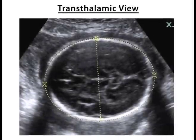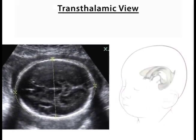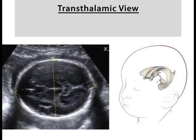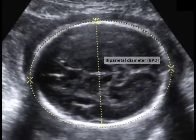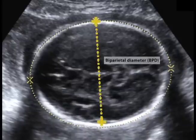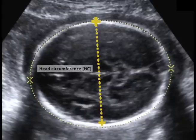Sonographic head measurements are obtained in the transthalamic view. This sonographic view is an axial or transverse image of the fetal head. The thalami and cavum septum pellucidum are important landmarks in this view. The biparietal diameter is measured perpendicular to the sagittal midline, from the outer edge of the skull in the upper or near field, to the inner edge of the skull in the lower or far field. The head circumference is measured by placing an ellipse around the outer edge of the skull.